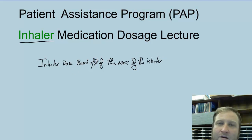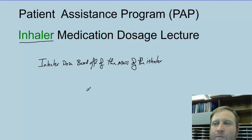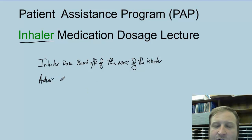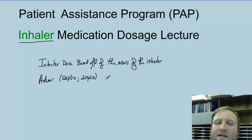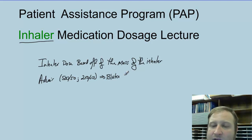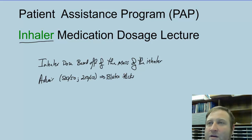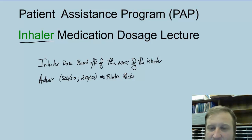For some of them, the inhalers have blister packs. For example, Advair — and there are a couple different doses, the most common being 500 per 50 or 250 per 50. These actually have blister packs that the mechanism pops, and then you inhale the remnants of the blister pack, and that's how the drugs are administered.